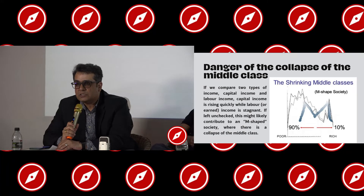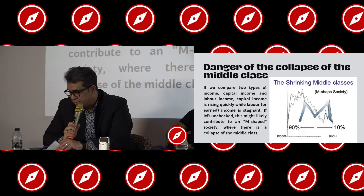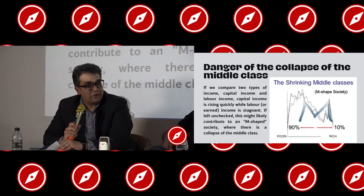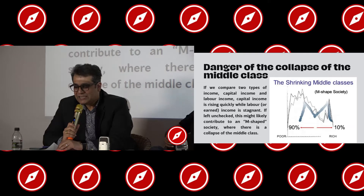The danger of collapse of the middle class. If you compare two types of income — capital income and labour income — capital income is rising quickly while labour or earned income is stagnant. If left unchecked, this might likely contribute to an M-shaped society where there is a collapse of the middle class.